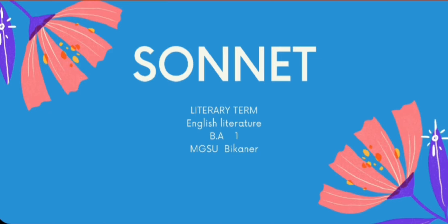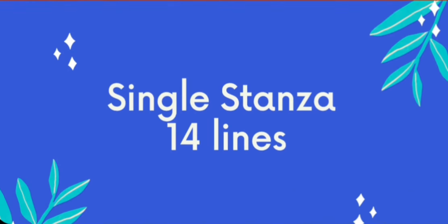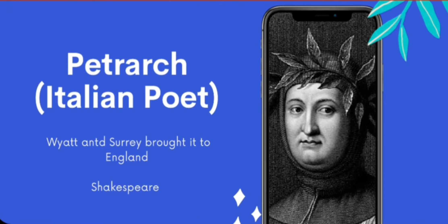The term 'sonnet' originated from the Italian word 'sonetto', which means a short poem accompanied with music. It is a poem written in a single stanza of 14 lines. These lines are written in iambic pentameter. Italian poet Petrarch was the first man to use this form.